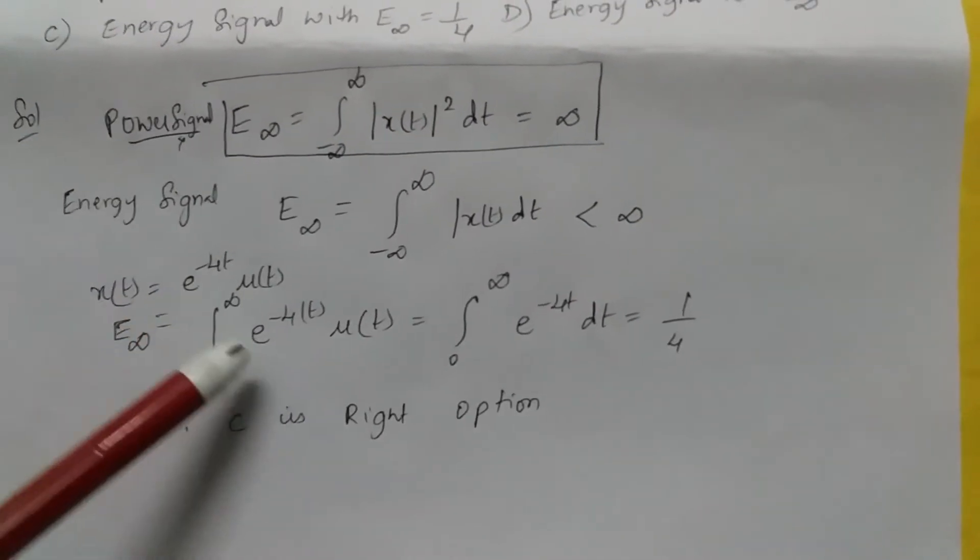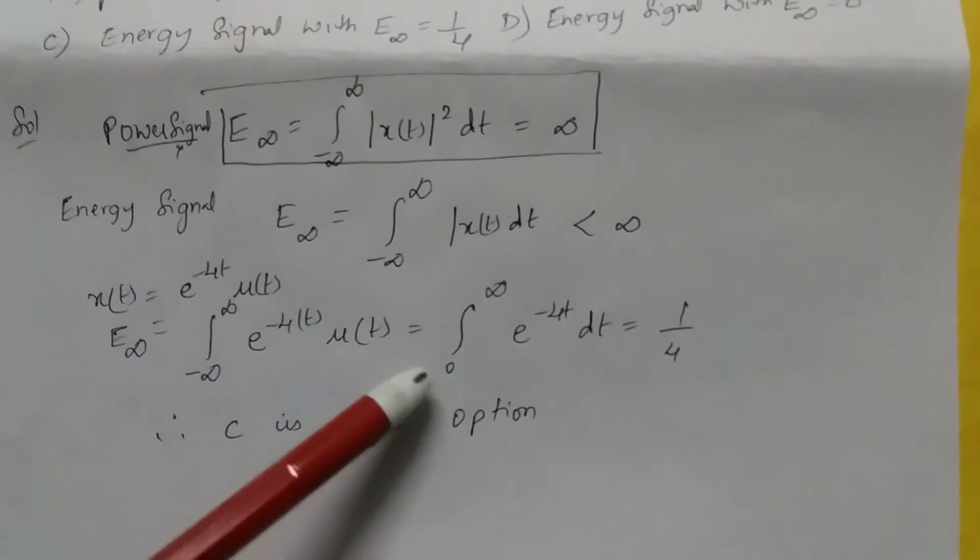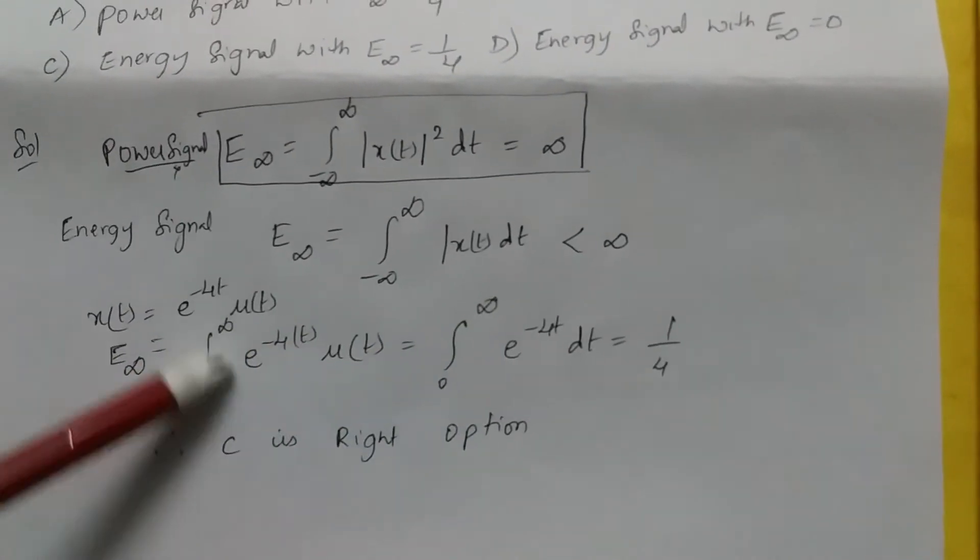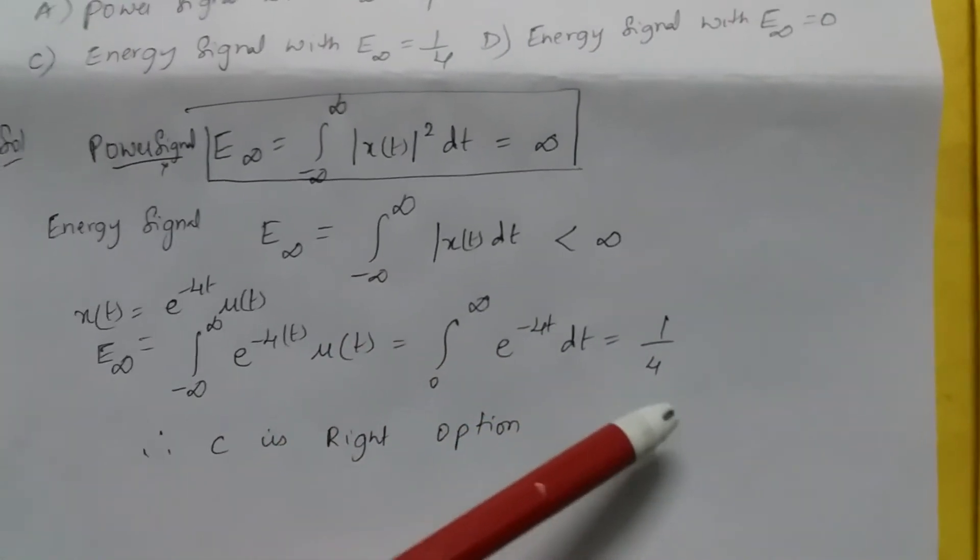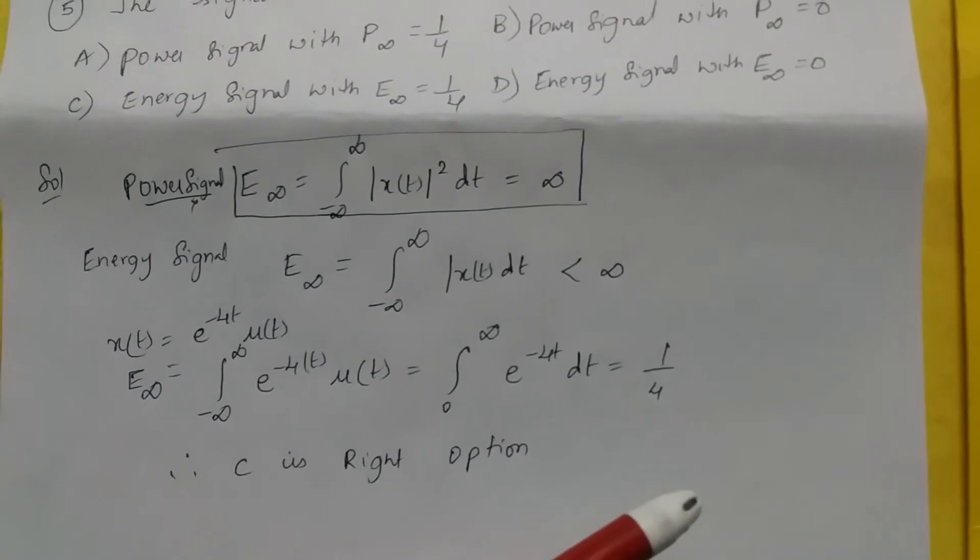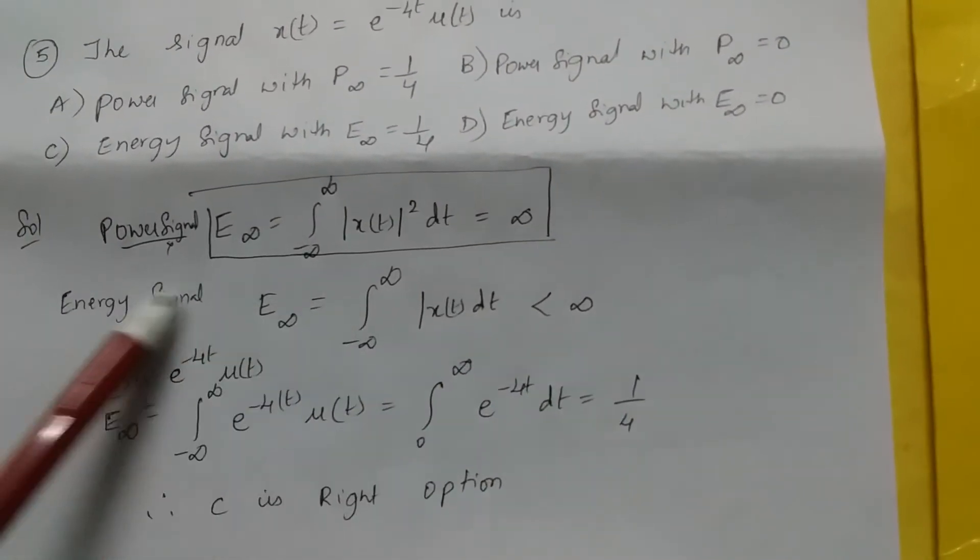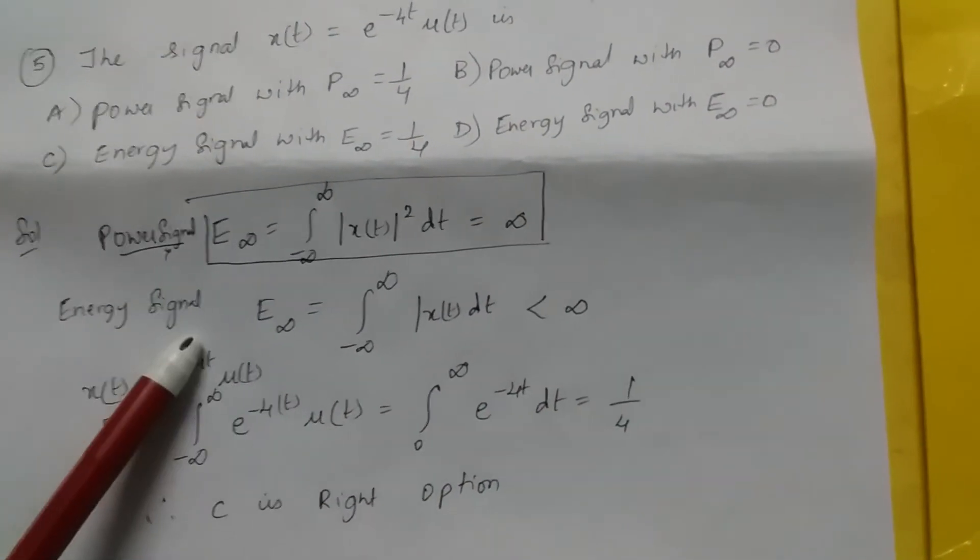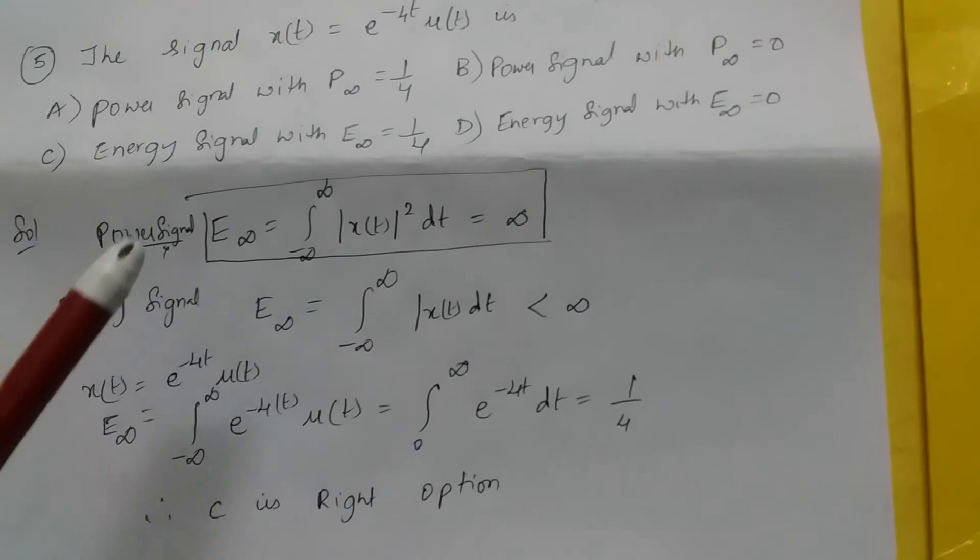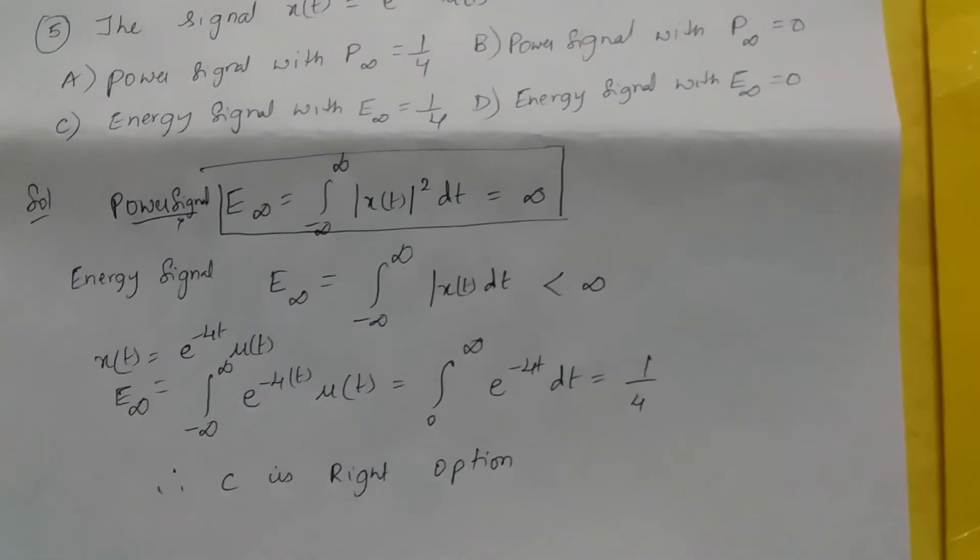Let's first calculate whether it is an energy signal or not. So let's substitute x(t) over here. So integral from minus infinity to infinity e to the power of minus 4t u(t), you can make this as 0 to infinity e to the power of minus 4t dt. That is equal to 1 by 4. That means that since this value is less than infinity, it is satisfying this energy signal condition. So this is an energy signal with a value equal to 1 by 4. Therefore, C is the right option.